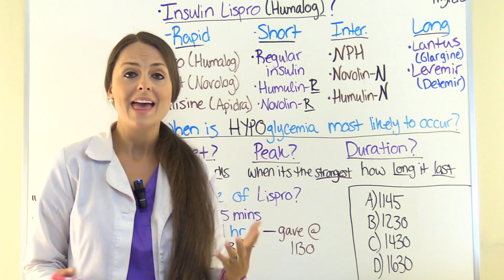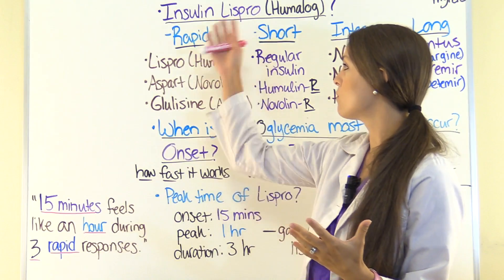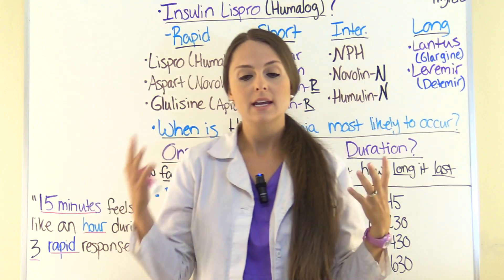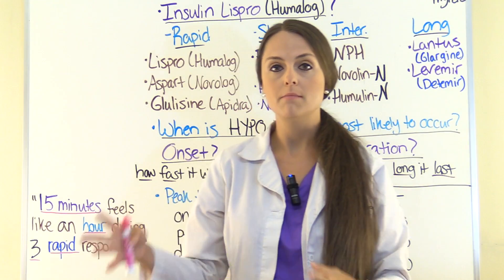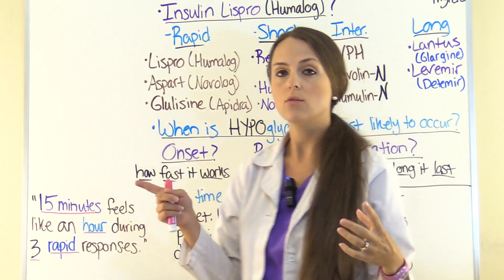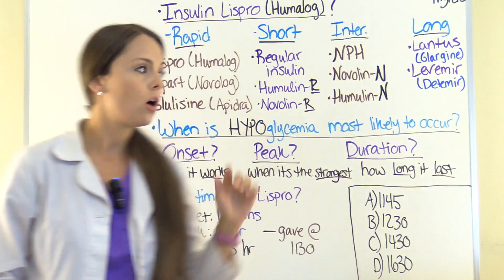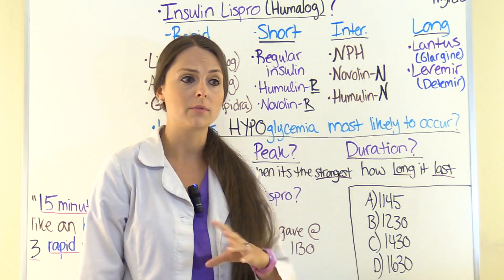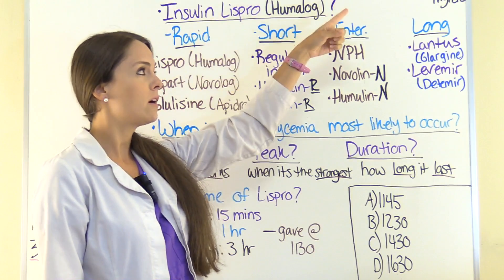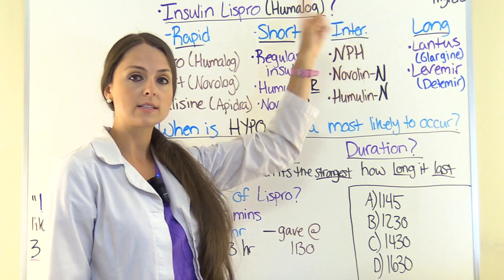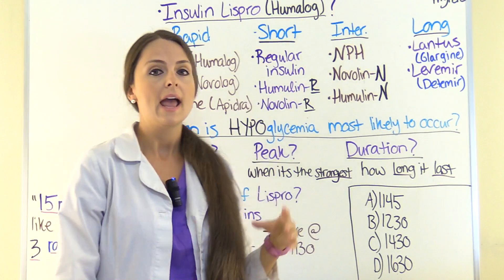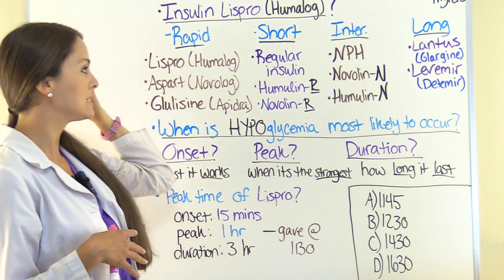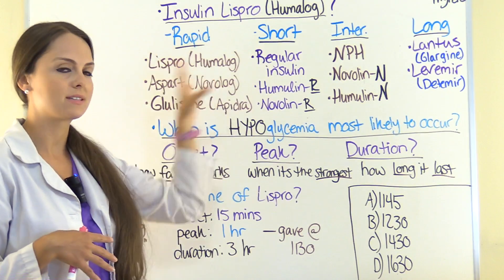So we've determined that this is a rapid-acting insulin. If you need a mnemonic to help you remember all these categories along with their onset, peak, and duration — because that is a lot to remember — I have a video, Insulin Mnemonics, that you can access up here in the card. It will go over those mnemonics with you so you can have memory aids to help you remember this material.